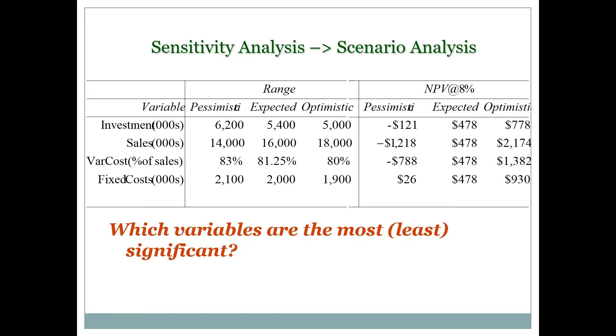Sales is the variable to which our analysis is most sensitive. What that means practically is that sales is going to be the thing we need to think the most about, because it has such a significant impact on whether we decide to take the project or not. Look at the net present values in this table — a difference in sales of only $2 million from our expected $16 million can mean we more than quadruple our net present value or lose more than a million dollars. This is a really significant predictor of project success.